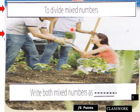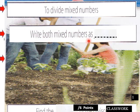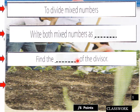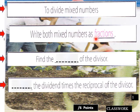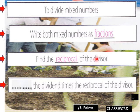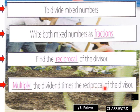Moving into today's classwork: to divide mixed numbers, write both mixed numbers as improper fractions. Then find the reciprocal of the divisor. Then multiply the dividend times the reciprocal of the divisor, and that will give you your quotient.